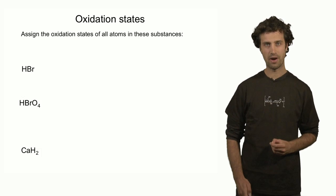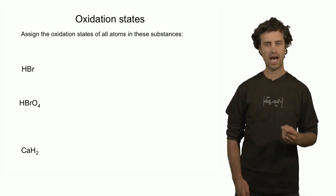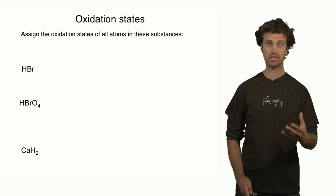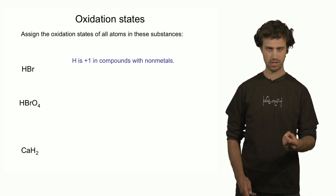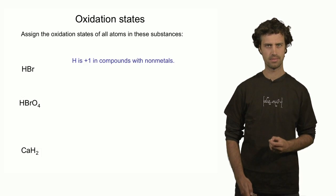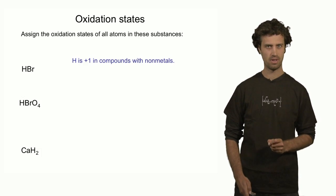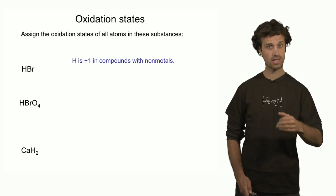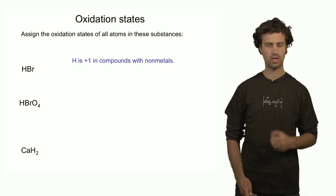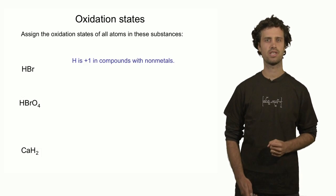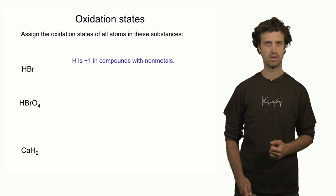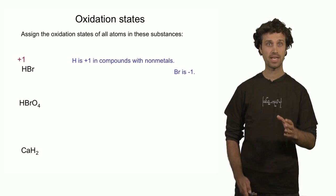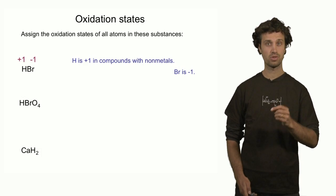The first compound that we're going to have a look at is hydrofluoric acid. Hydrofluoric acid is a covalent compound, and that means that the oxidation state of the hydrogen must be plus one. Now, we also know that if we add up the oxidation states of all the atoms in this compound, we must find zero because this is a neutral compound. Using this, we can find the oxidation state of the bromine atom. Since hydrogen is plus one, the bromine atom must have oxidation state minus one. They add up to zero.